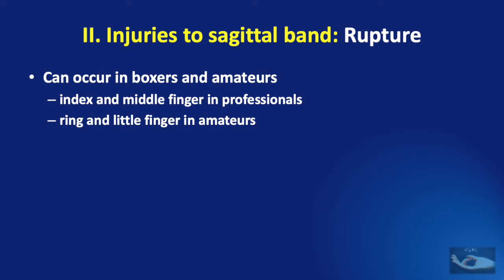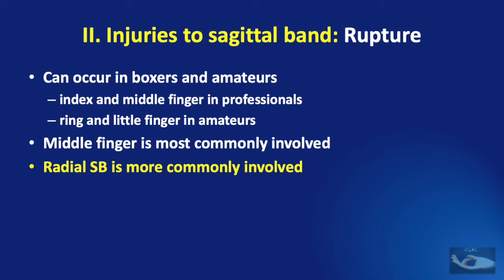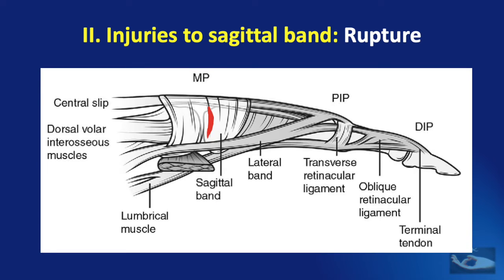It is interesting to note that rupture of the sagittal bands occurs commonly in boxers and amateurs — so much so that this injury is sometimes called the boxer's knuckle. In boxers it is the sagittal bands of the index and middle fingers that are involved, while the ring and little fingers are involved in amateurs. The middle finger is the most commonly involved overall, and in the middle finger it is the radial sagittal band that is more commonly injured — in a ratio of nine to one compared with injury to the ulnar sagittal band.